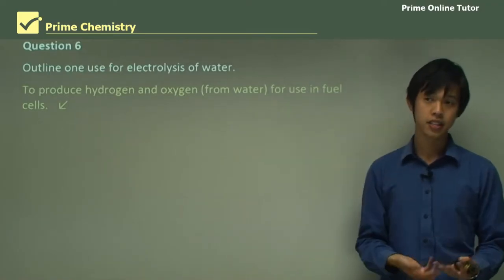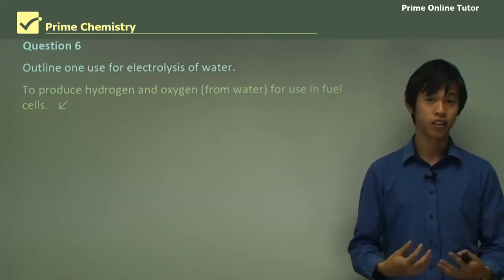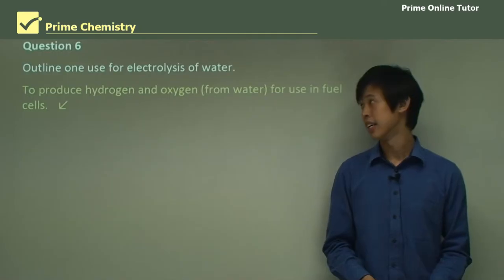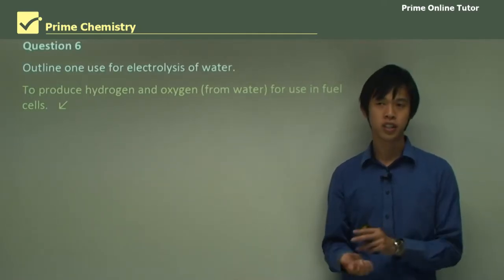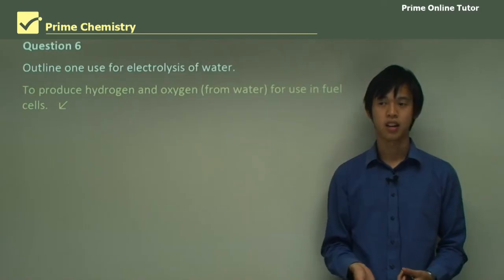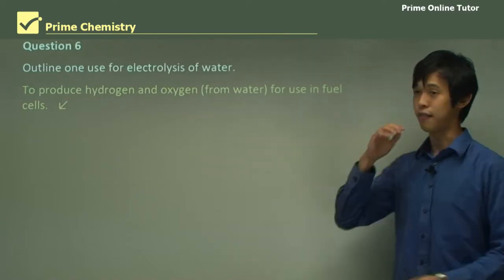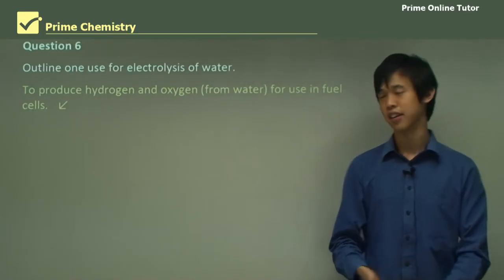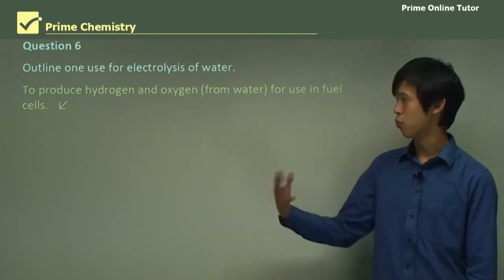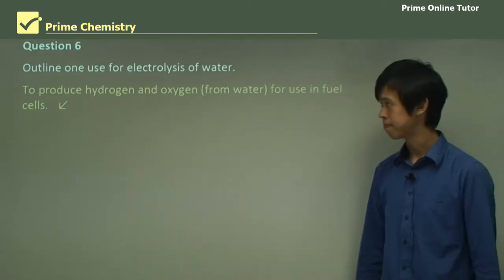In year 12 you'll definitely study batteries, and maybe the fuel cell if your teacher is quite brave. Fuel cells have always been regarded as a very new technology that has the potential to revolutionize the electrical industry. A fuel cell can take hydrogen and oxygen, turn it into water, and produce electricity. If you had a tank of hydrogen and a tank of oxygen, you could potentially have a water emitting car that you could drive around. Fuel cells are a very exciting new technology that might help this whole climate change issue in the future. One way to use electrolysis is to produce this hydrogen and oxygen for use in these cool new fuel cell things.